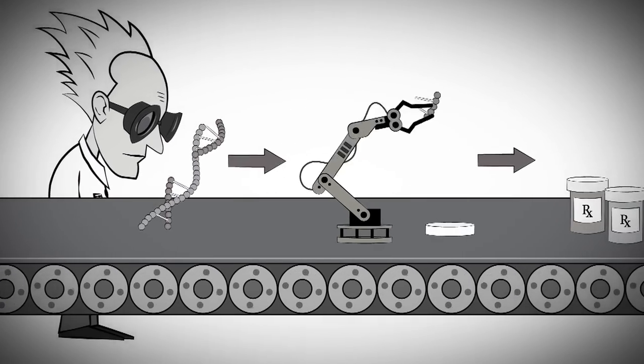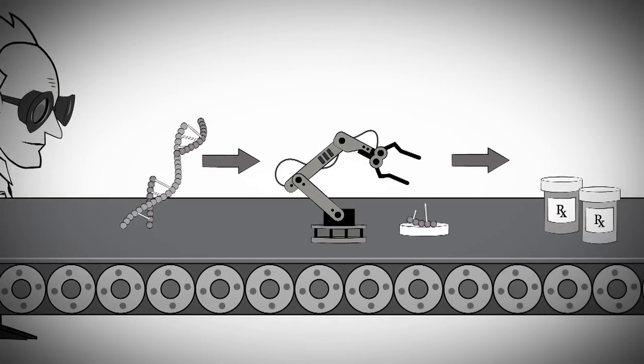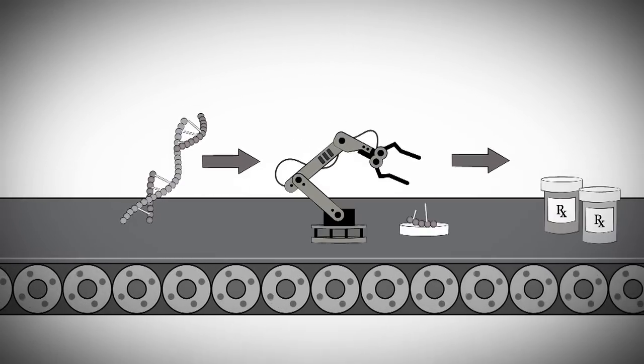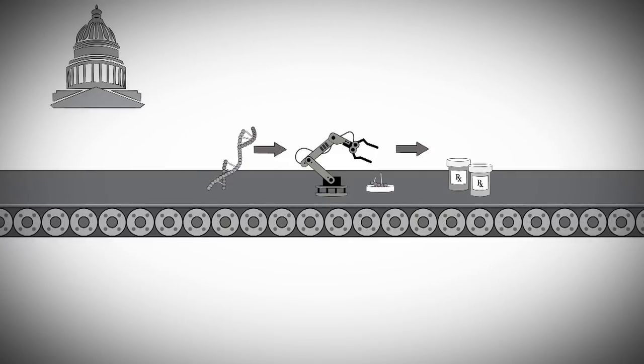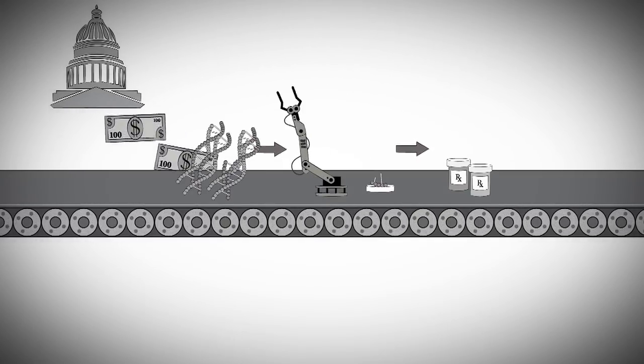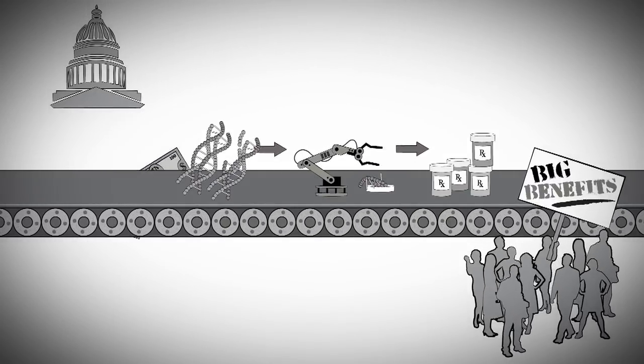These are powerful ideas that help build public support for science and technology. The linear model also made decision-making about science easy. The more money that went into the R&D system, the more benefits were guaranteed to society.